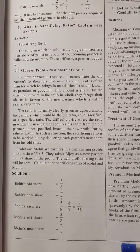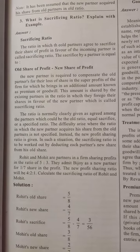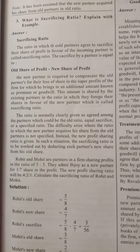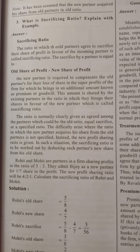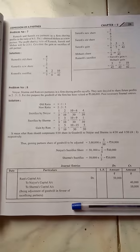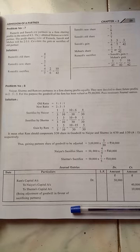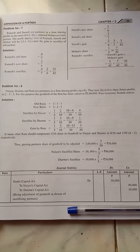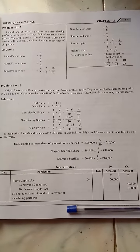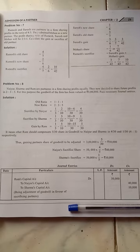This is also a repeated last question — sacrificing ratio and gaining ratio. In a repeated pattern, I find these two important questions of calculation of sacrificing ratio and distribution of goodwill, which are very important.